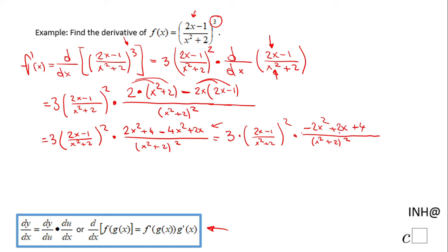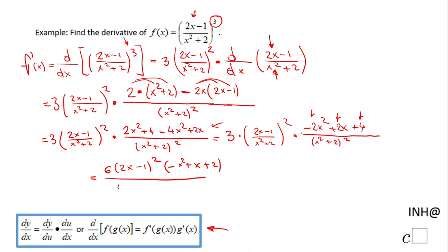This is a good answer, but you may want to do some rearrangement. We can factor out a 2, and combined with the 3 that gives us 6 — so we have 6 times (2x minus 1) to the second power, times the quantity (negative x squared plus x plus 2), over (x squared plus 2) to the fourth power. The fourth power comes from having a power of 2 in this part of the expression and another power of 2 from the denominator. This is a very clean final form.